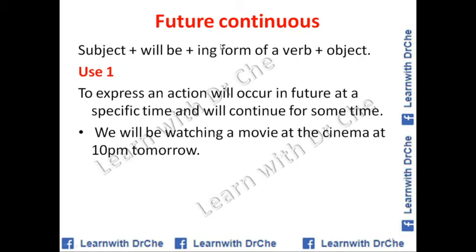Future continuous tense: subject plus will be plus the -ing form of a verb plus object. Use number one: to express an action that will occur in the future at a specific time and will continue for some time — an action that will occur and will continue for a time. Then we use future continuous.